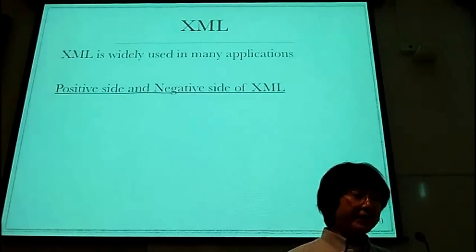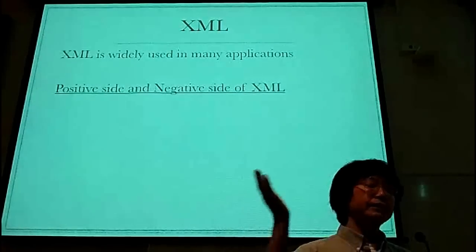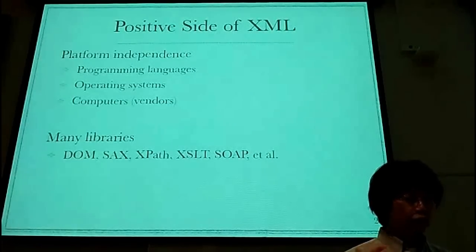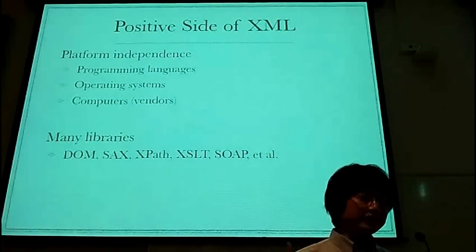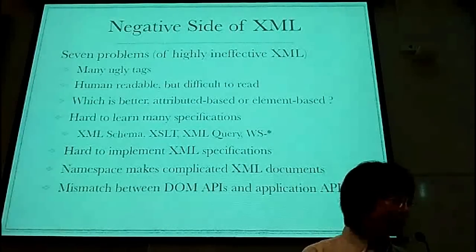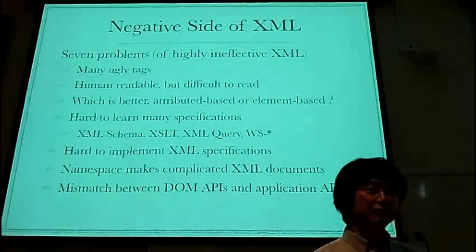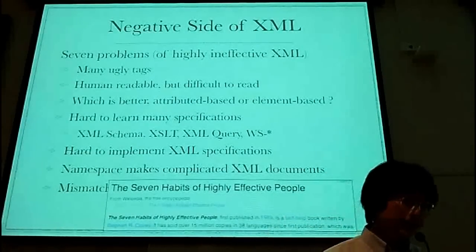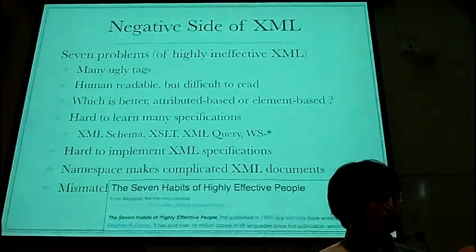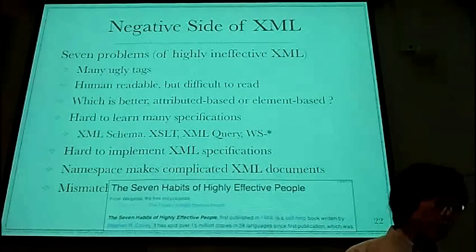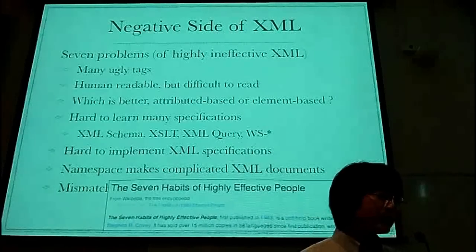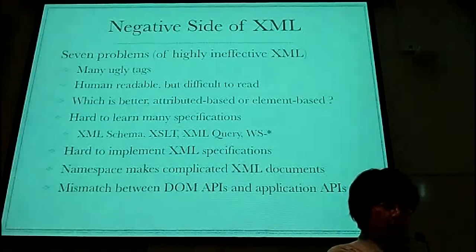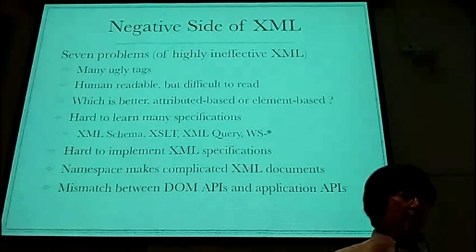XML is widely used in many applications, but XML has a positive side and a negative side. On the positive side, XML supports platform independence across programming languages, operating systems, and computers. There are many libraries: DOM, SAX, expat, XT, and so on. But on the negative side, I usually say there are seven problems of highly ineffective XML. There are many angle tags — it's human readable but difficult to read. Sometimes it's unclear whether attribute-based or element-based is better. XML schema, XML query — it's hard to implement a bunch of XML specifications. Namespace is great but it makes XML applications complicated. There are mismatches between DOM APIs and application APIs. So I designed my own data representation.